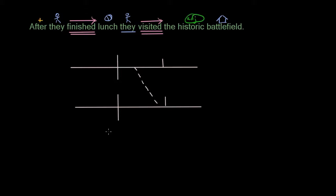The adverbial clause is telling us when — when did they visit the battlefield? Remember, adverbs tell when, where, why, in what manner, and to what extent. The independent clause always goes on top; the subordinate clause goes underneath it.